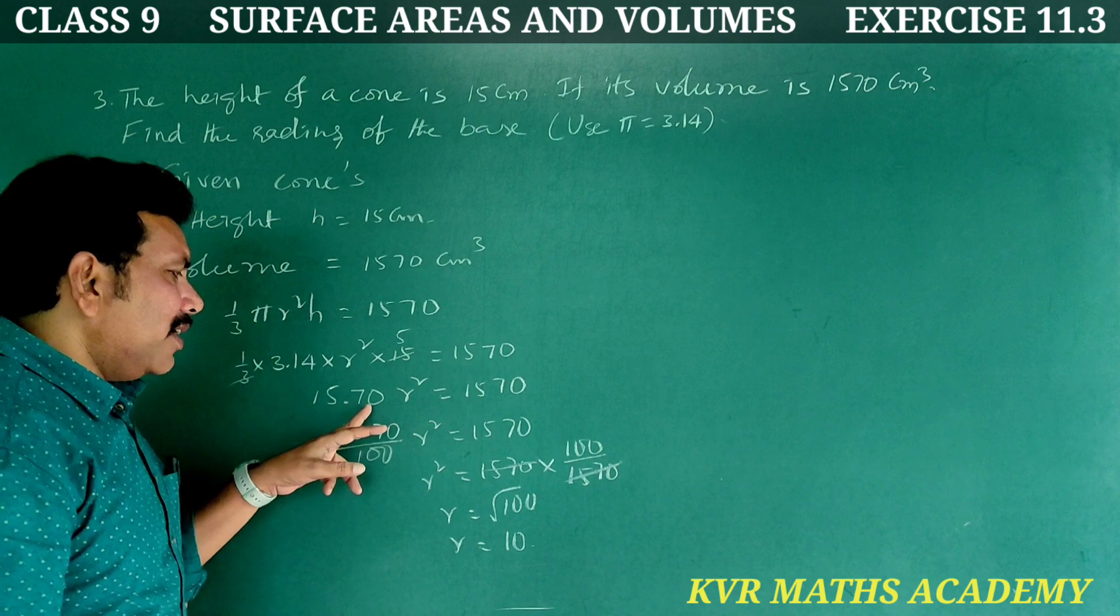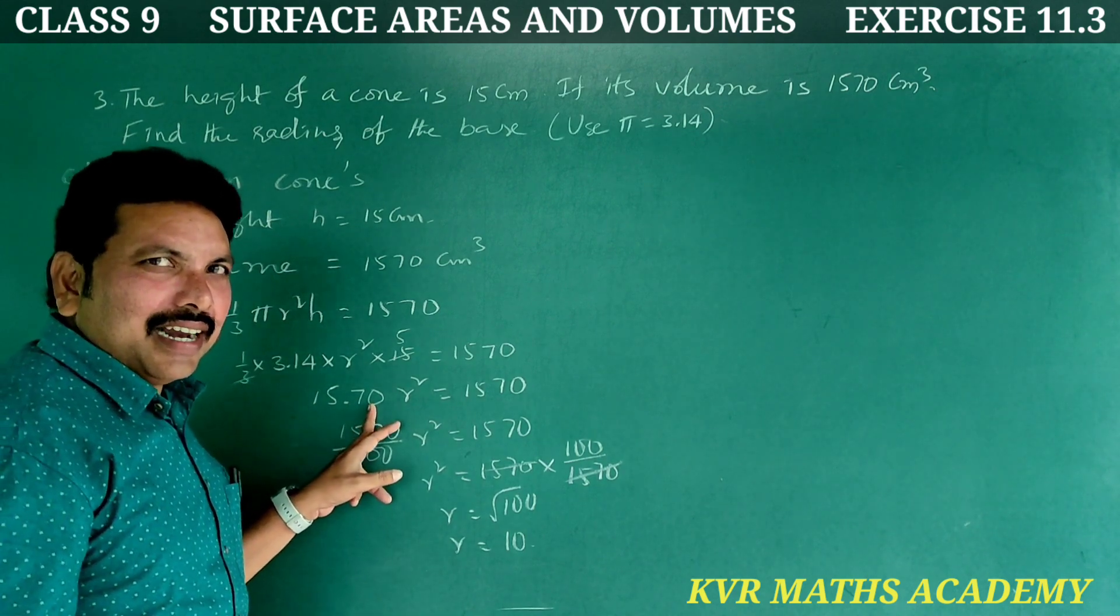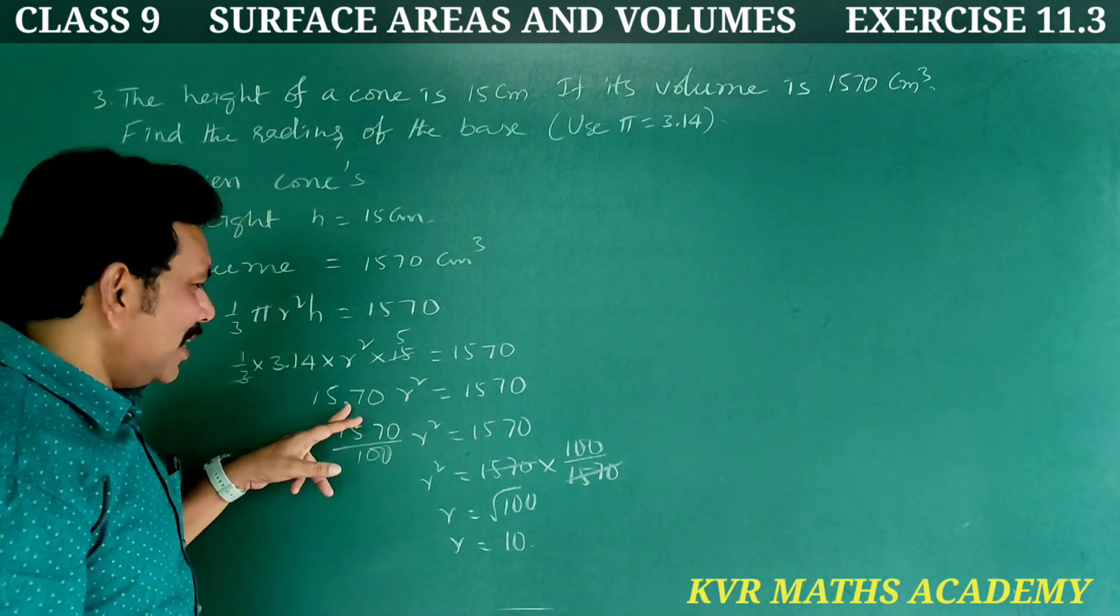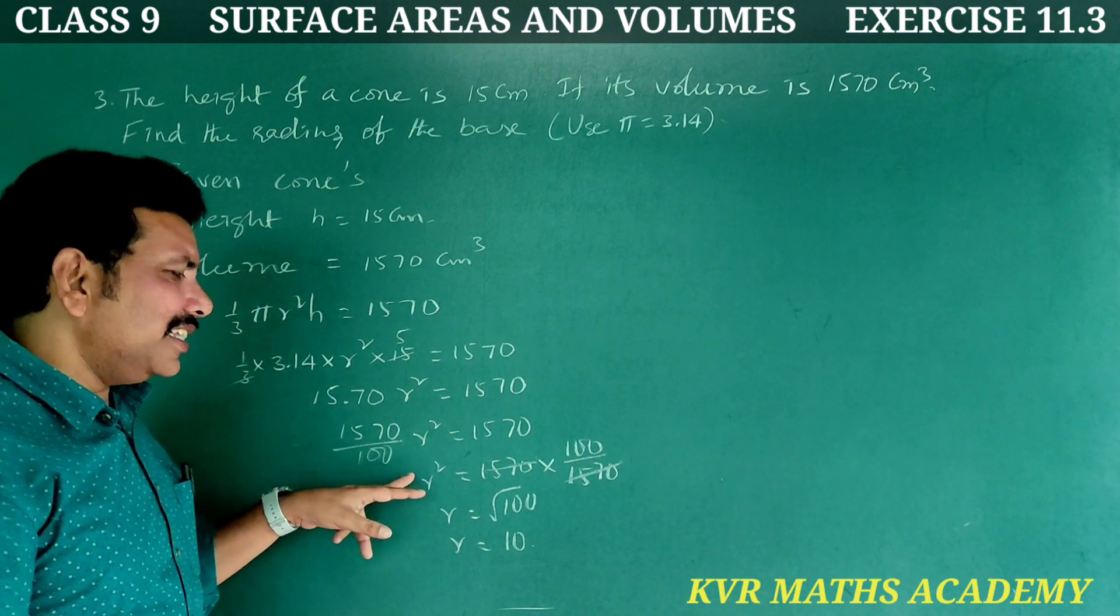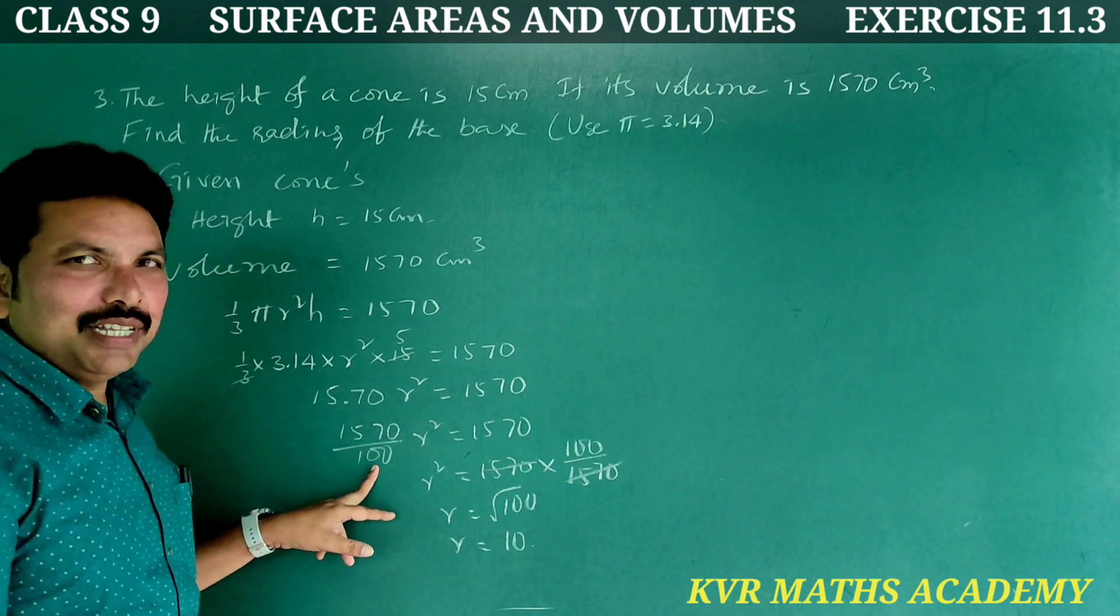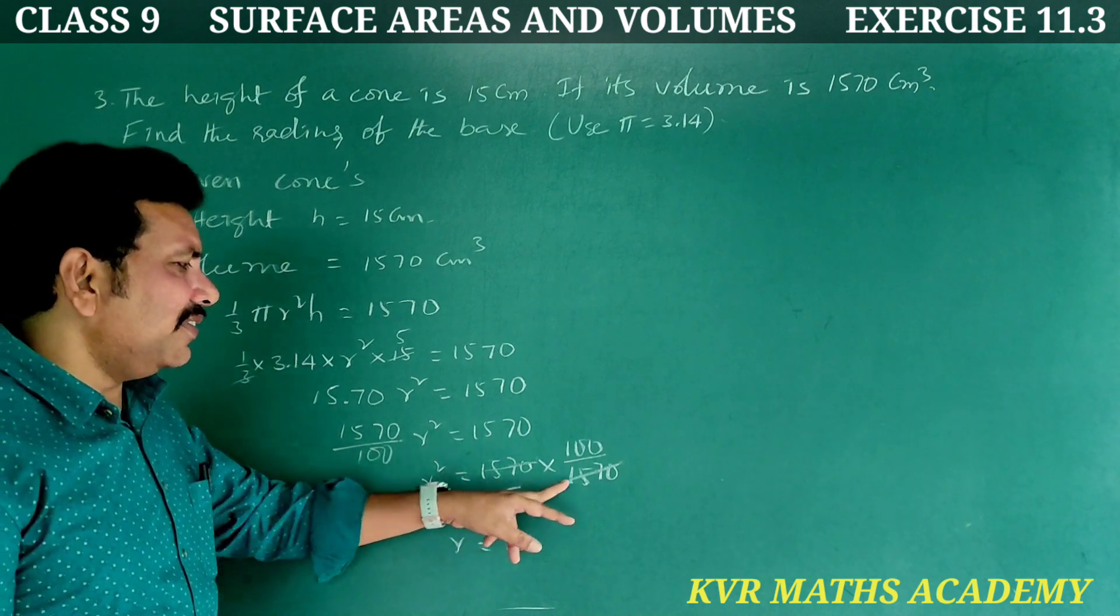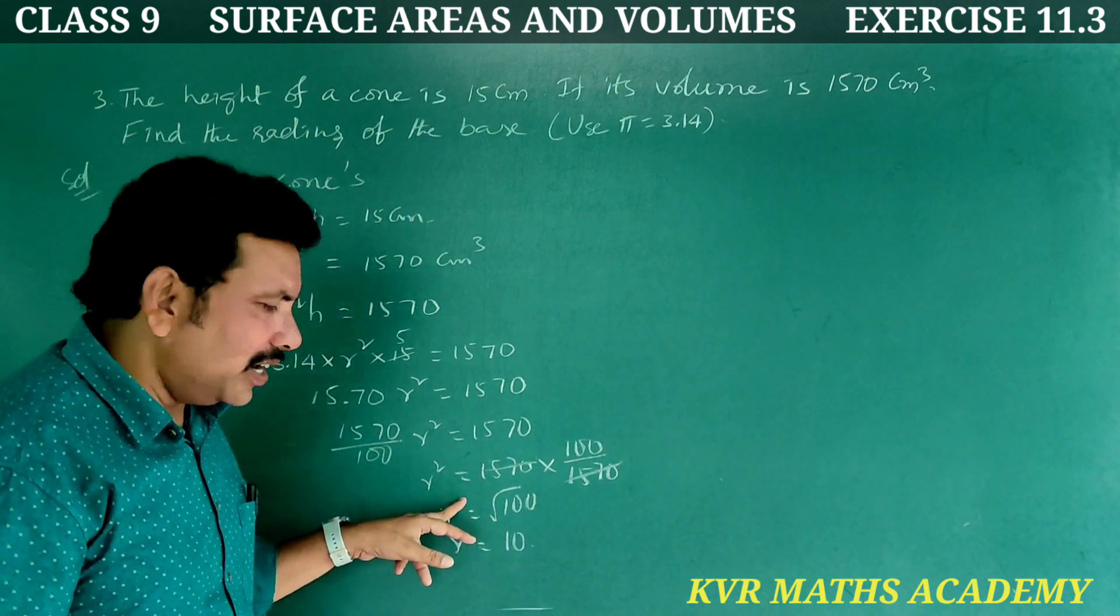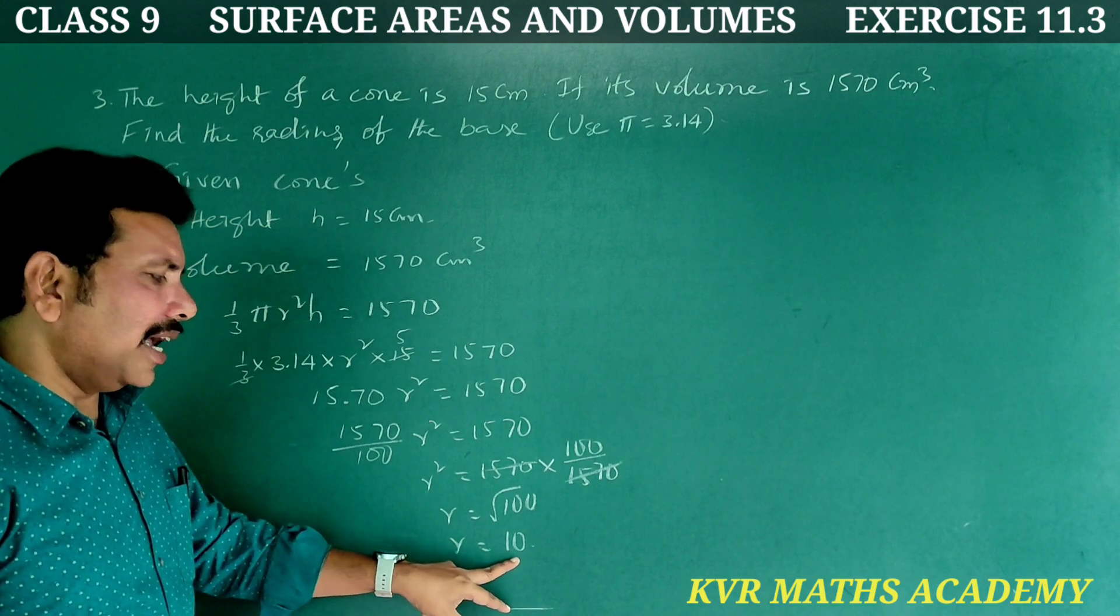And here, point zero cancel. If we have cancellation, calculation easy. 1570 and 15.70. So R is equal to 10 centimeters.